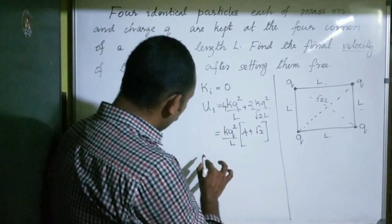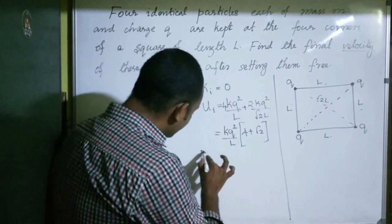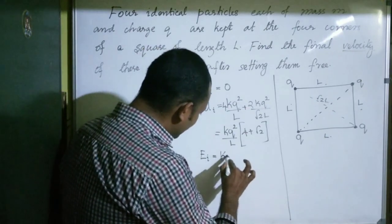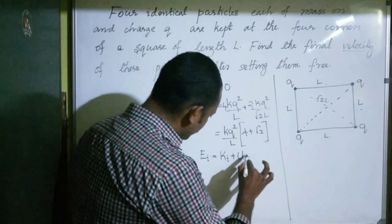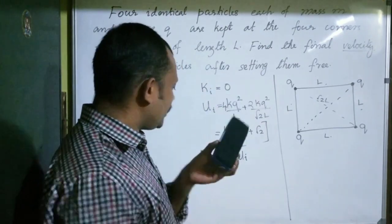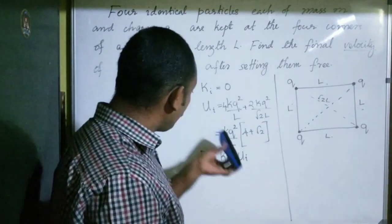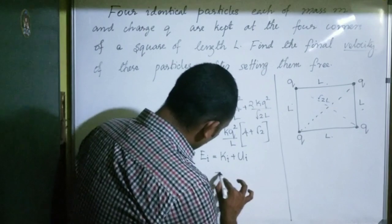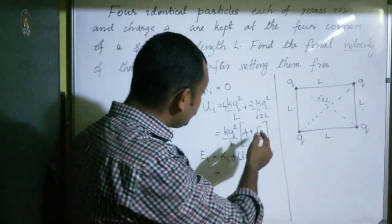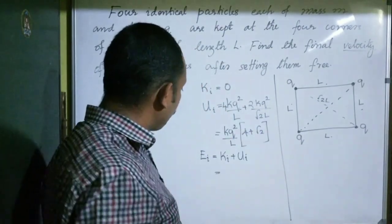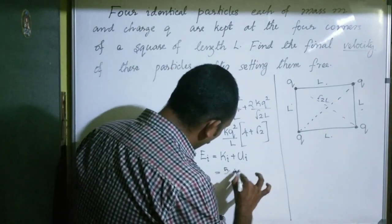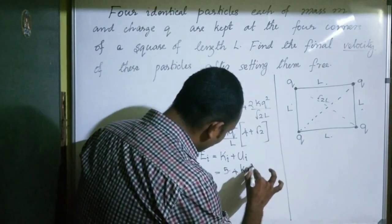This is the initial potential energy of the system. The initial mechanical energy is the sum of kinetic energy and potential energy. Since the initial kinetic energy is zero and taking √2 ≈ 1.4, the initial potential energy is 5.4 KQ²/L.